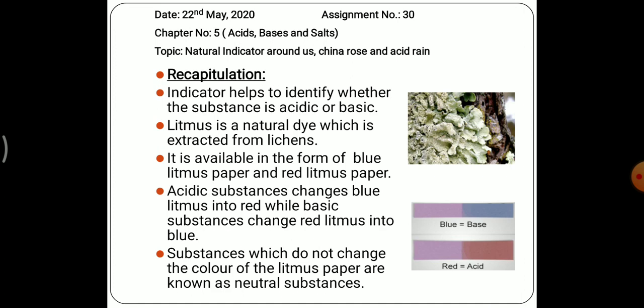Then we studied about the litmus indicator. Indicators help us identify whether a substance is acidic or basic. We need indicators because we cannot taste all substances. Litmus is a natural dye obtained from lichens — which are a combination of algae and fungus — and it is available as blue litmus paper and red litmus paper. Acidic substances change blue litmus to red, while basic substances change red litmus to blue. Neutral substances do not change the color of litmus paper.